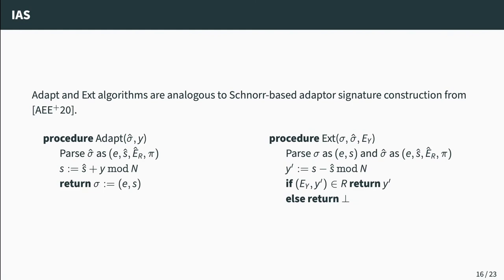What remains are the adaptation and extraction algorithms, which are analogous to Schnorr-based constructions with the only difference that we now work modulo n instead of modulo q. In the ADAPT algorithm, the party knowing witness y adds it to the partial signature s-hat to obtain a full valid signature s, and we drop e_r_hat and the zero-knowledge proof π since they are no longer needed. In extraction, we simply subtract the complete signature s from the partial signature s-hat to obtain the witness y'.